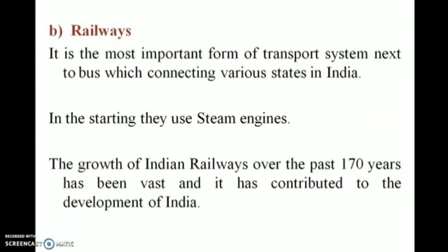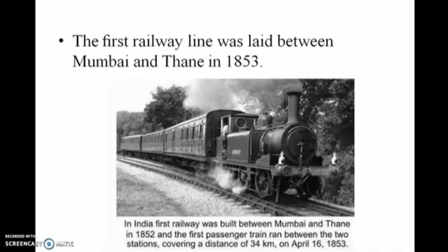Railways is the most important form of transport next to the bus, connecting various states in India. In the beginning, they used steam engines. The growth of Indian railways over the past 170 years has been vast and has contributed to the development of India. The first railway line was laid between Mumbai and Thane in 1853.